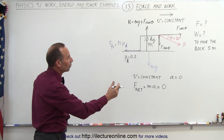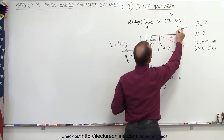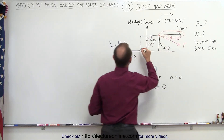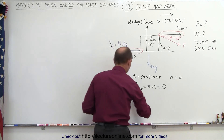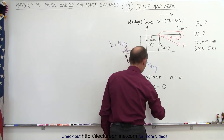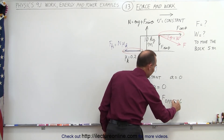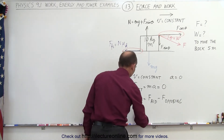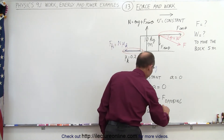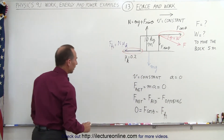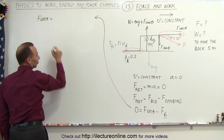That means all the forces aiding the motion equal all the forces opposing the motion. The horizontal component, F times cosine of theta, is aiding the motion, while the friction force is opposing it. So F-net equals forces aiding minus forces opposing, meaning zero equals F cosine theta minus the friction force.